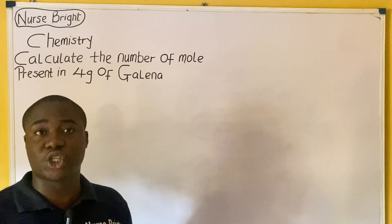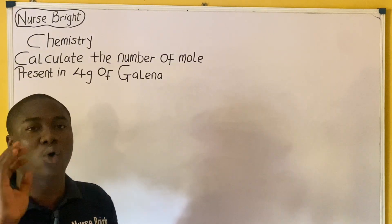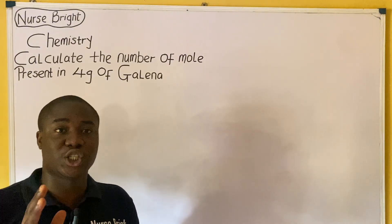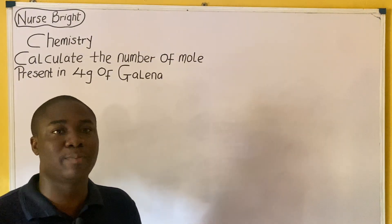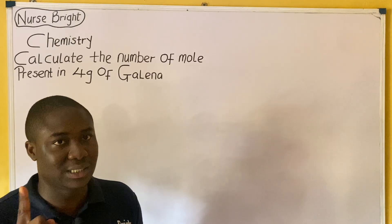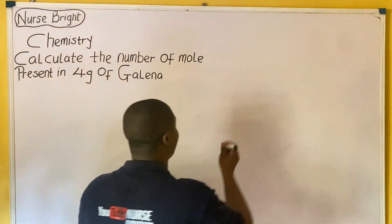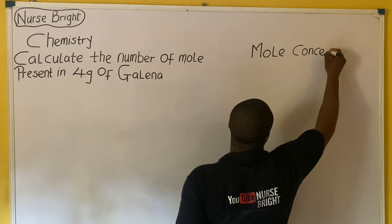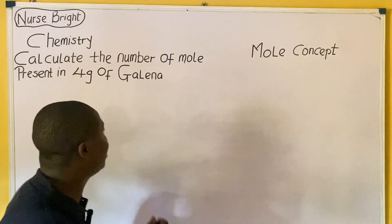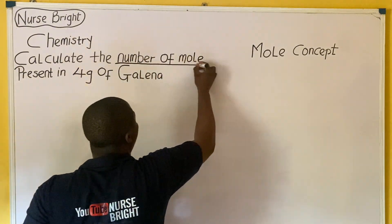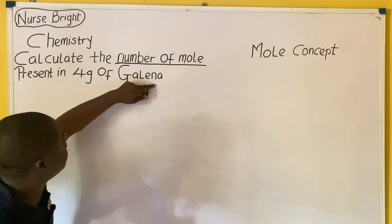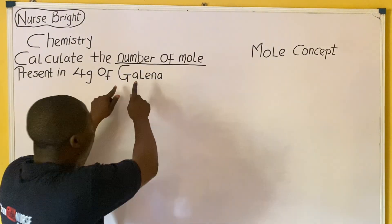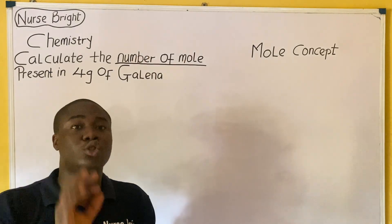Before we go ahead to solve any question in chemistry, it is very important for us to understand the topic to which this question belongs. From the look of things, this question is on a very important aspect in chemistry called the mole concept. This question is asking us to determine the number of moles present in 4 grams of this compound — galena is not somebody's name, it is a compound. Pay close attention to the way we'll be solving this question.